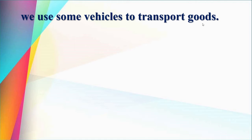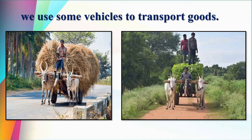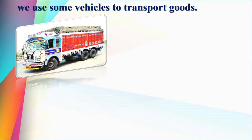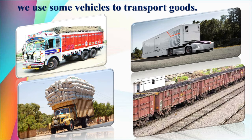We use some vehicles to transport goods. We just studied about liquid and gas states. Now coming to solid state — in village areas, bullock carts are used to transport goods from one place to another. In city areas, we use trucks, big containers, and goods trays. These vehicles help us carry heavy loads from one place to another.